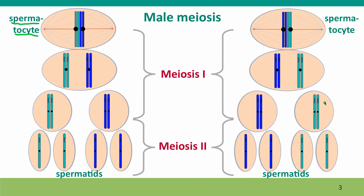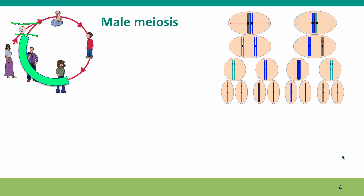Here's another meiosis in the same male. The chromosomes have lined up differently, but the products are the same — all four spermatids go on to become sperm. When does this happen in males? It starts happening around puberty and continues pretty much through the whole life. Sperm production gradually decreases as men get older, but there's lots of evidence of men producing functional sperm even well into old age.